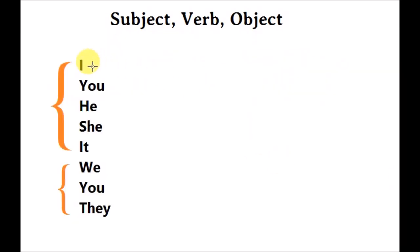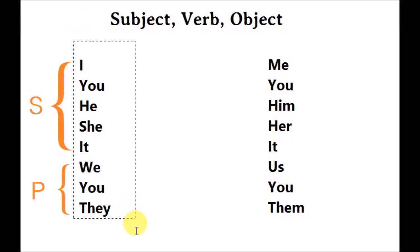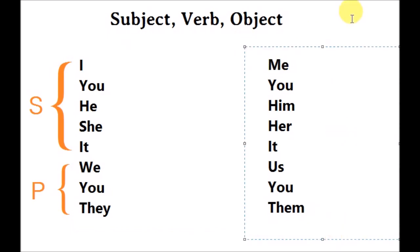These are personal pronouns. 'I,' 'you,' 'he,' 'she,' and 'it' are all singular, and 'we,' 'you,' and 'they' are all plural. These are called subject pronouns. And these would be the corresponding object pronouns. So you've got the subject pronouns on one side and the object pronouns on the other.